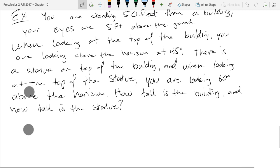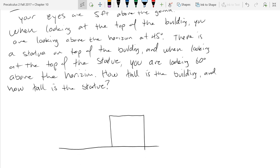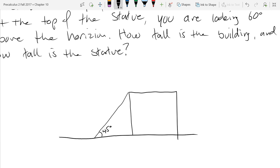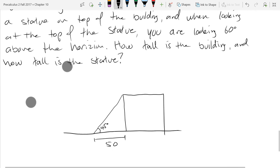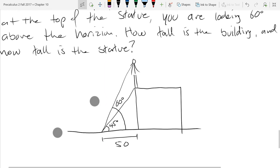Let's draw out the situation. We're 50 feet away from a building. We look at the top of the building at 45 degrees above the horizon, so there should be a 45 degree angle right there. We're 50 feet from the building. I'll draw a statue at the top of the building - that bigger angle is supposed to be 60 degrees.